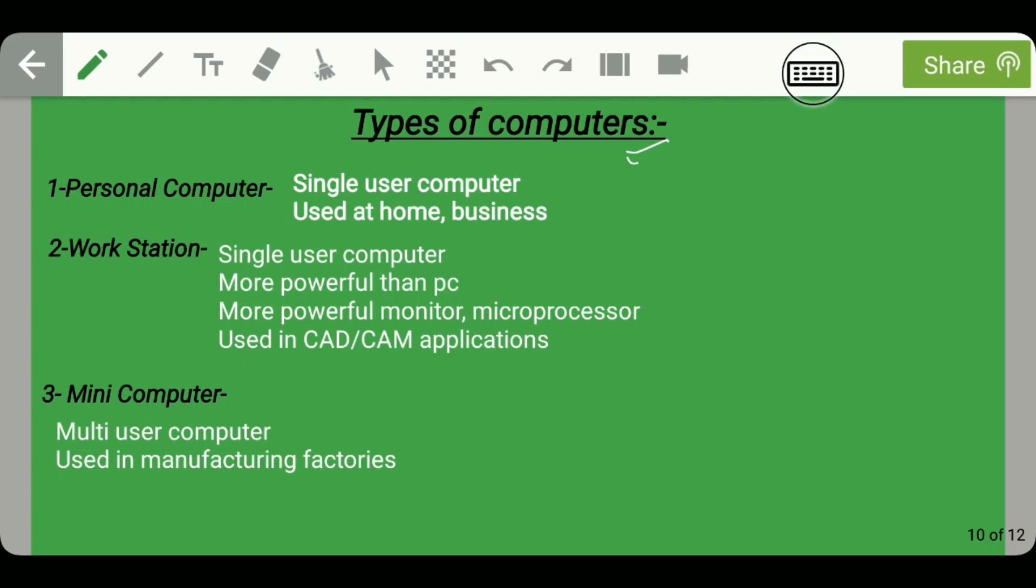In ICT, the main component is system. Without system there is no existence of ICT. So here we are discussing the different types of systems. The first type of computer is personal computer. The basic features of personal computer are that it is a single user computer. Moreover, it is used at home and business.